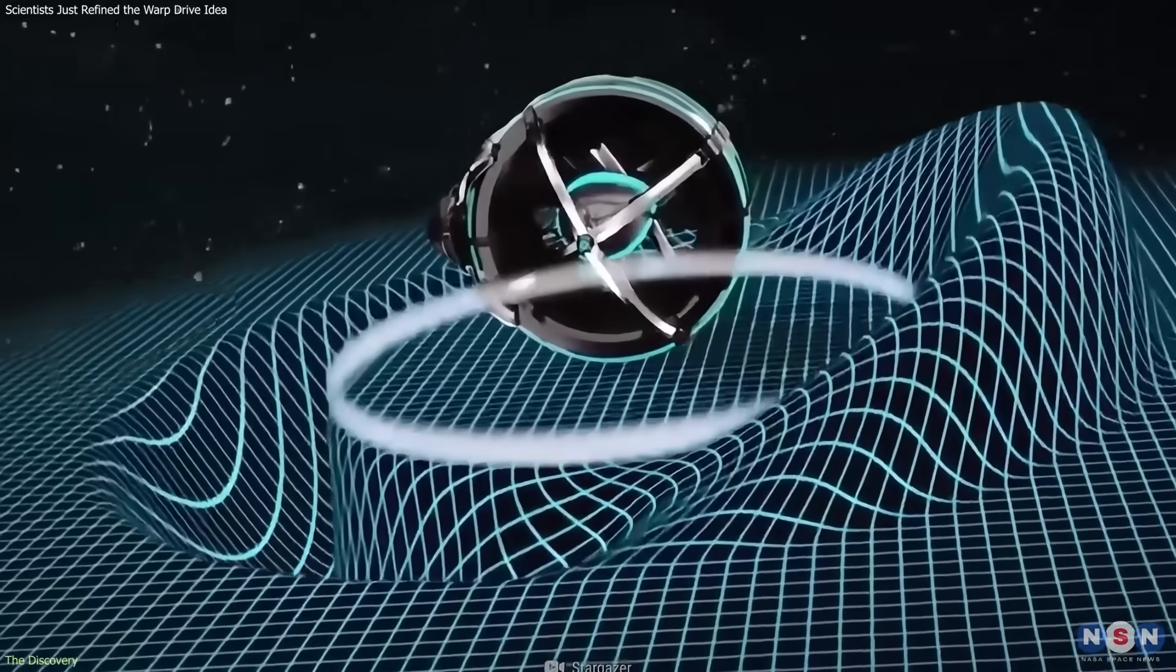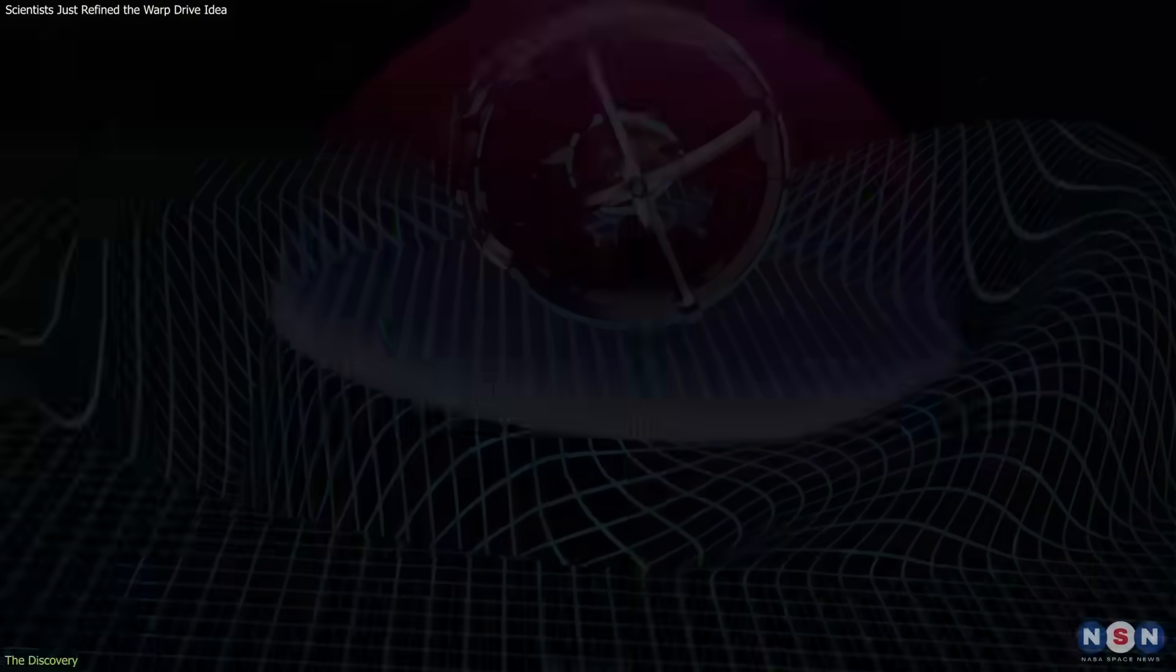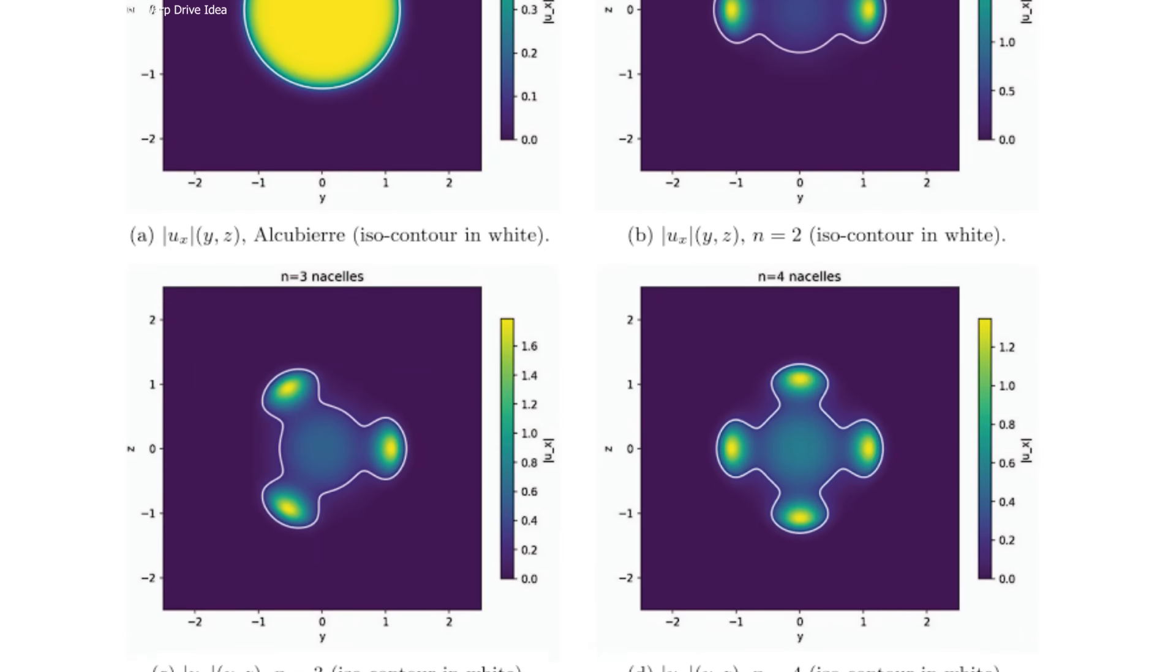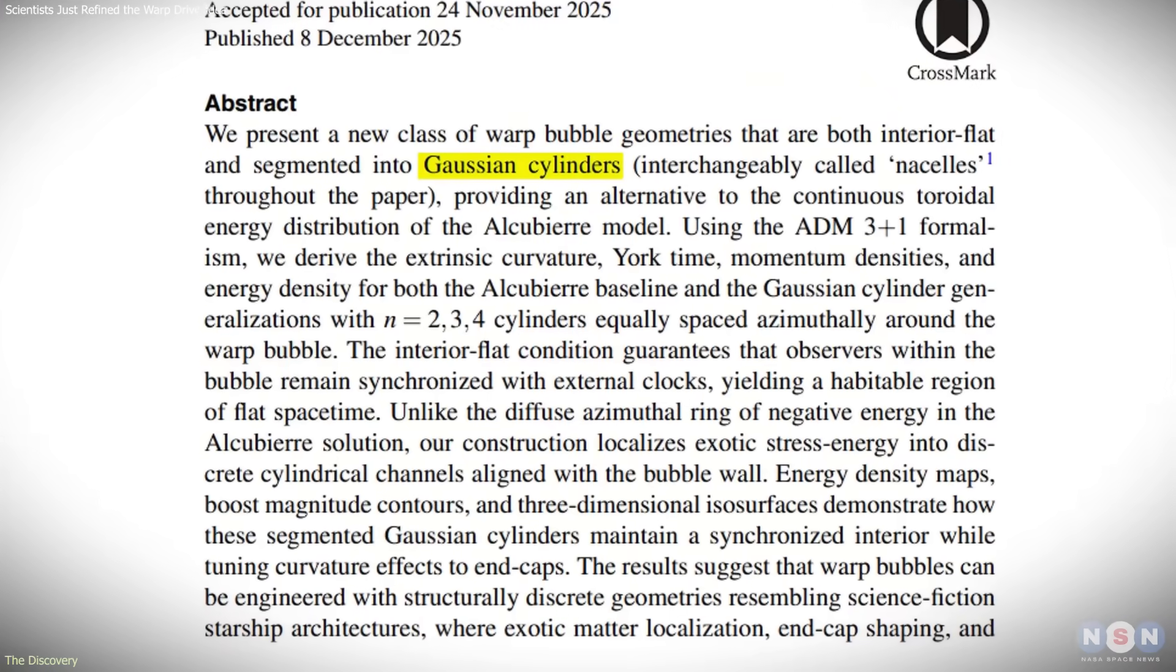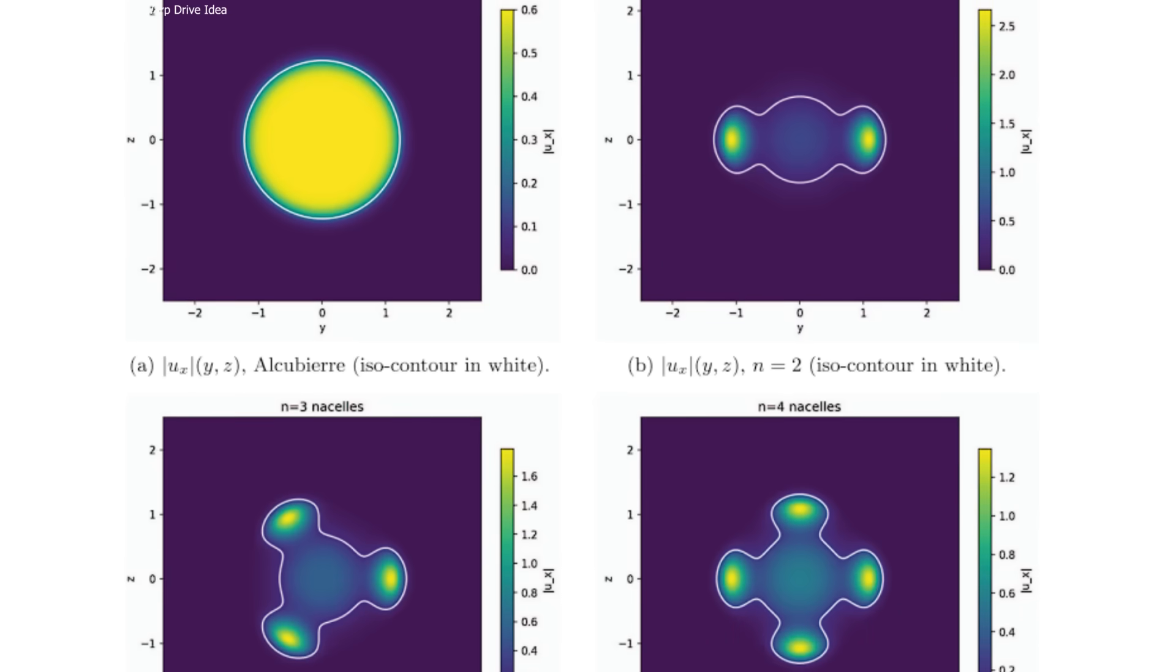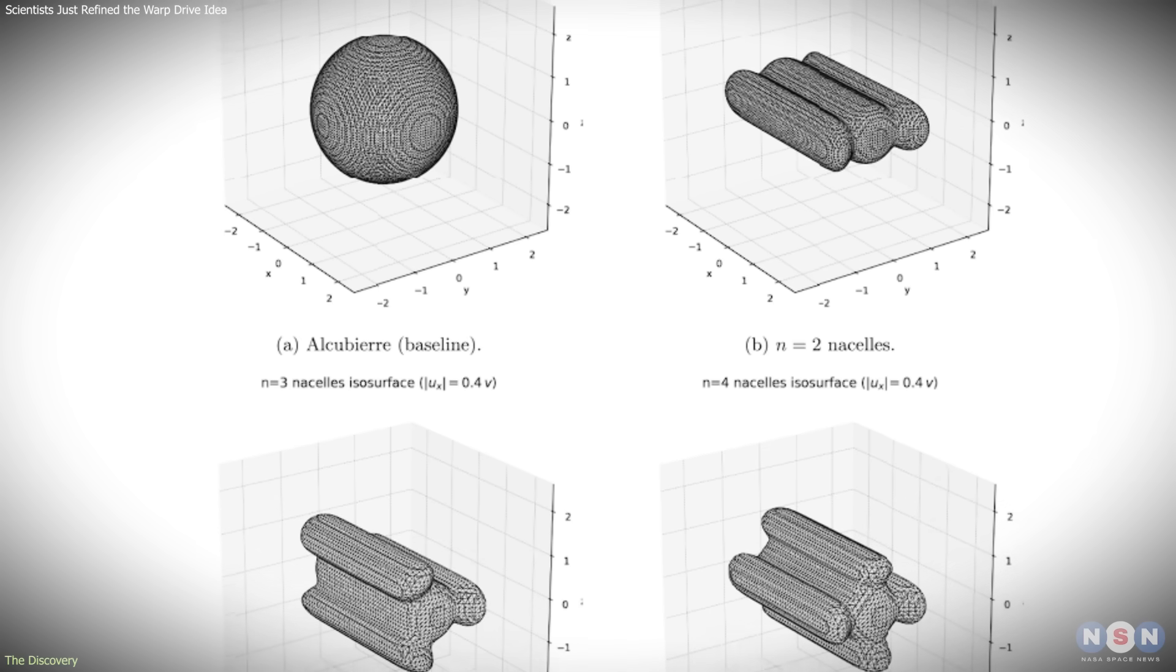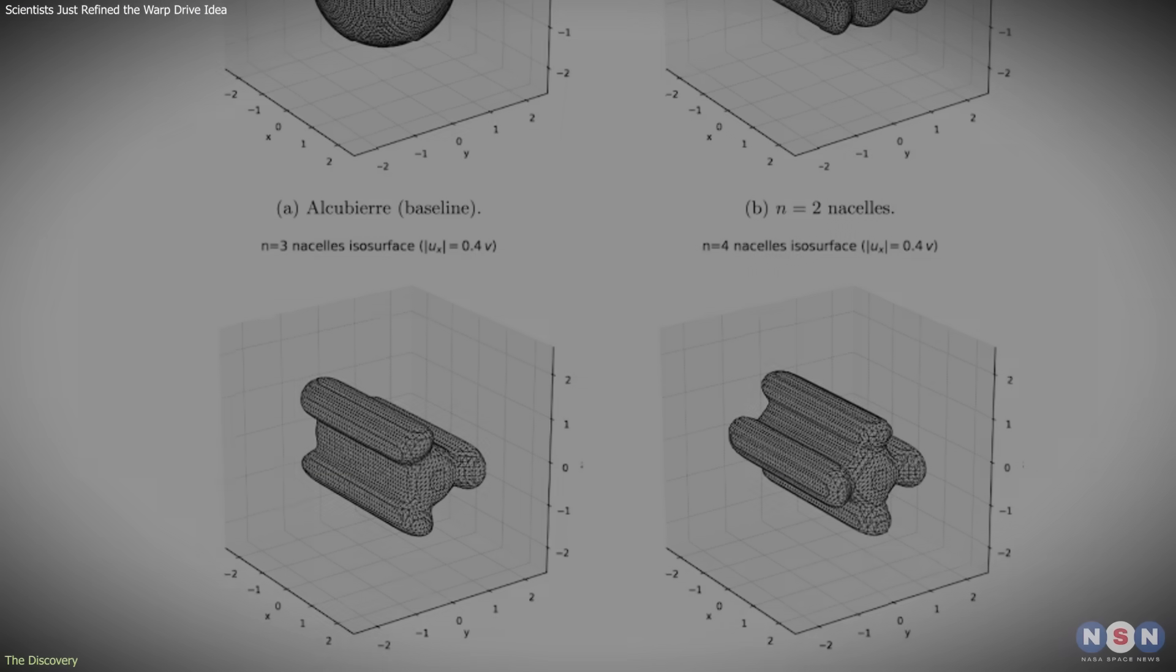Rather than enclosing the spacecraft inside a single, continuous spherical warp bubble, the proposed design distributes spacetime distortion across multiple discrete regions. These regions are described mathematically as Gaussian cylinders and are positioned away from the main body of the spacecraft. This configuration allows the spacecraft interior to remain in a comparatively flat and stable spacetime region, while the extreme curvature required for warp motion is handled externally.